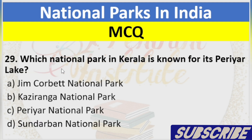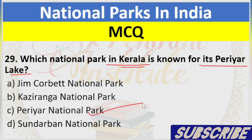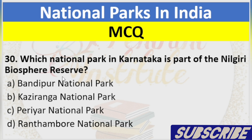Question 29: Which National Park in Kerala is known for its Periyar Lake? A. Jim Corbett National Park, B. Kaziranga National Park, C. Periyar National Park, D. Sundarbans National Park. Answer: C. Periyar National Park.